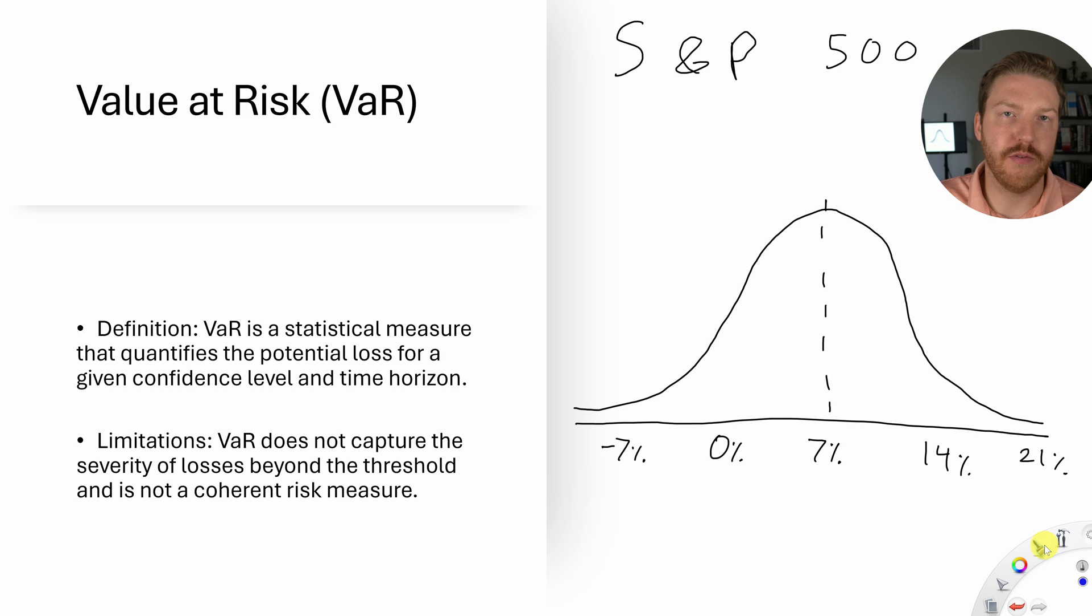Let's start off with a quick definition of value at risk or VaR. VaR is a statistical measure that quantifies the potential loss for a given confidence level and time horizon. In this example, let's say we're looking at the S&P 500 returns for a one-year period. Now, if we're looking at S&P 500 returns for one year, it's typical that the S&P 500 returns about 7%. So that is our mean directly in the middle of the distribution of our potential returns.